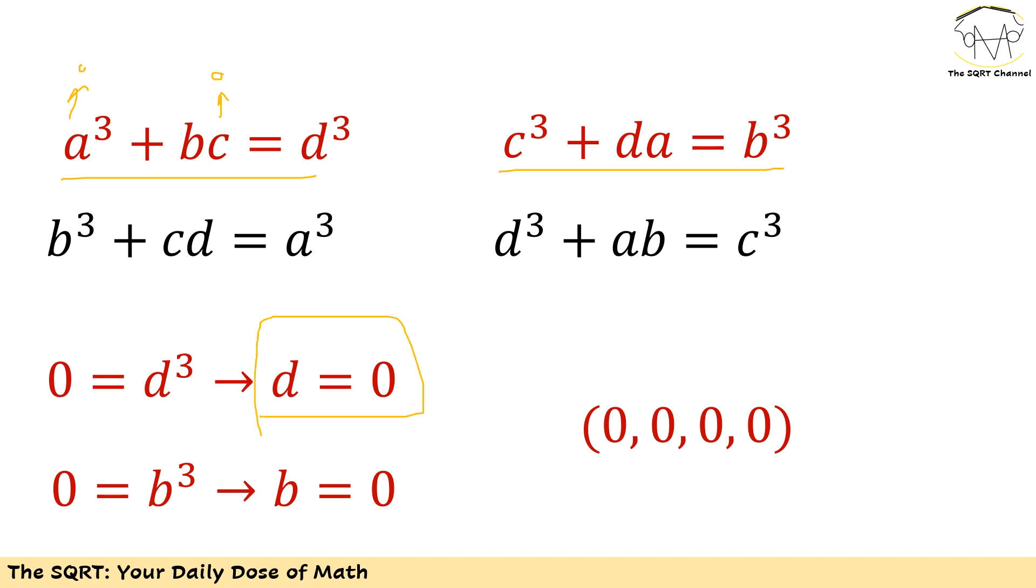I'm going to use the same approach but for the second equation: c is zero, a is zero, so b needs to be zero too. So obviously (0, 0, 0, 0) for a, b, c, and d is going to be an answer.